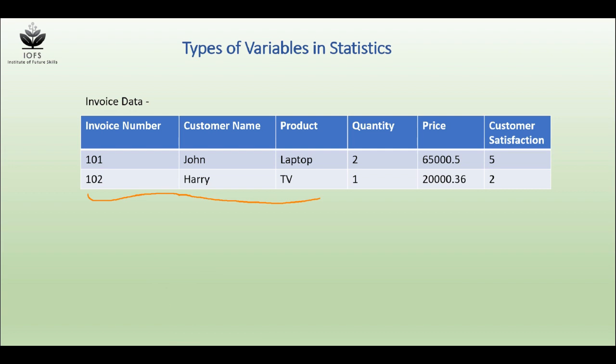These are nominal data, which is a kind of qualitative data. Quantity is discrete data because it does not have any decimal point.